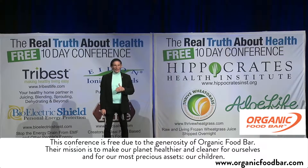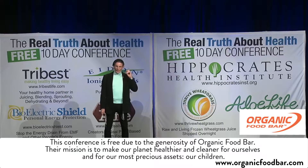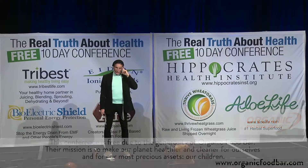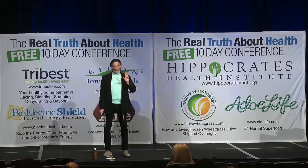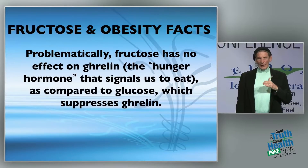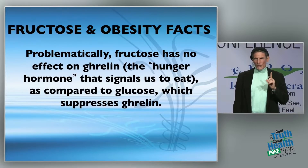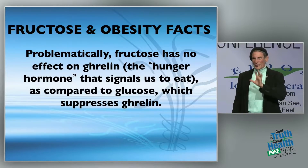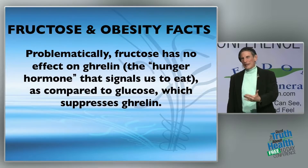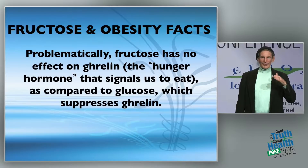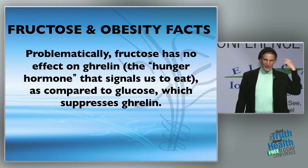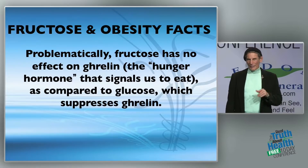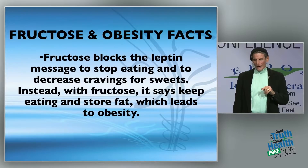Fructose is ten times more active in creating AGEs (advanced glycation end products). A lot of cancer cells — particularly pancreatic — love it. It also drives brain inflammation, which is key to Alzheimer's. It mixes up insulin and leptin signaling, and it blocks ghrelin, the hormone that tells us we're full.